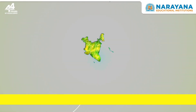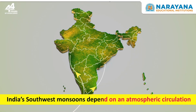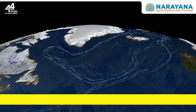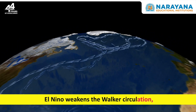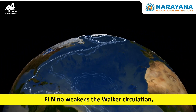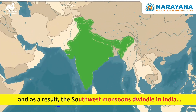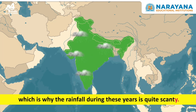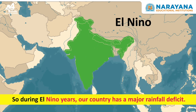India's southwest monsoons depend on an atmospheric circulation known as the Walker circulation. El Niño weakens the Walker circulation and, as a result, the southwest monsoons dwindle in India, which is why the rainfall during these years is quite scanty. So during El Niño years, our country has a major rainfall deficit.